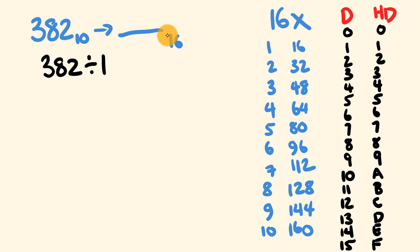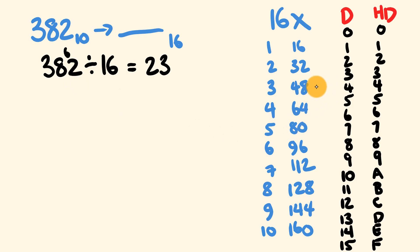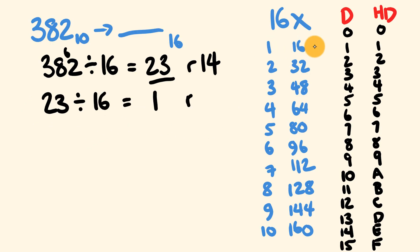We take 382 and divide by 16. 3 divided by 16 won't go, so we take 38 divided by 16 — that equals 2 because 2 times 16 is 32, with a remainder of 6. Then 62 divided by 16 equals 3, because 3 times 16 is 48, giving a remainder of 14. We keep those remainders aside. Our quotient is 23.